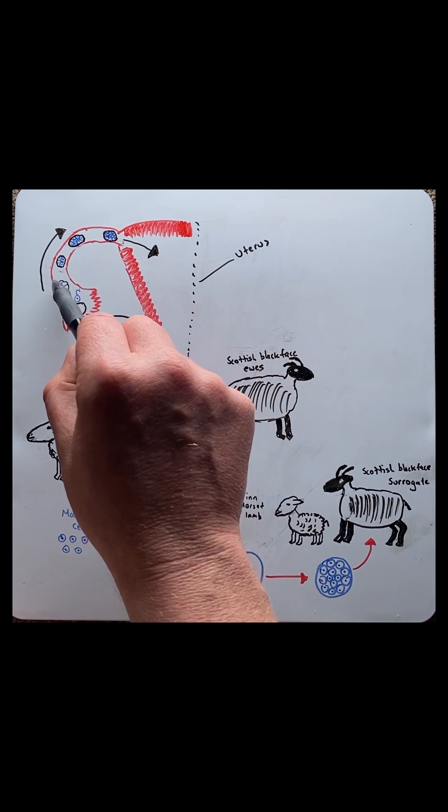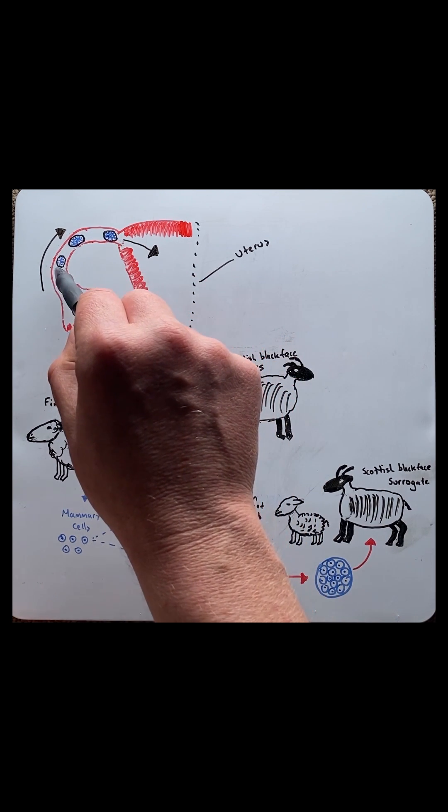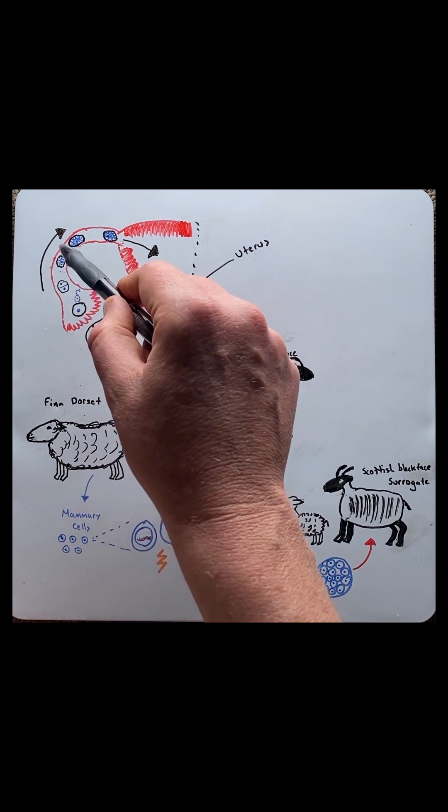From here this one cell zygote continues up the fallopian tube to move into the uterus, and as it moves up it goes through a process of mitosis which essentially doubles the cell number.